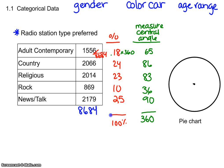It doesn't matter where you start. I usually start in standard position, which is about 3 o'clock, and estimate 65 degrees. It doesn't have to be perfect — you can use a protractor to measure, but just be close. Always label what that region represents: adult contemporary, and what percent it is.